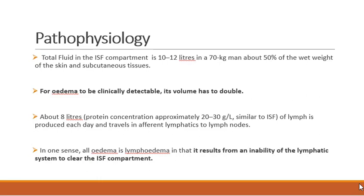Regarding pathophysiology, the total amount of interstitial fluid produced is around 10 to 12 liters in an average 70 kg man — about 50% of the wet weight of skin and subcutaneous tissue. For edema to be clinically detectable, this volume should double to 20 to 24 liters. Total lymph production is 8 liters of interstitial fluid traveling each day through afferent lymphatics to lymph nodes, where the volume is reduced by about half before entering venous circulation.